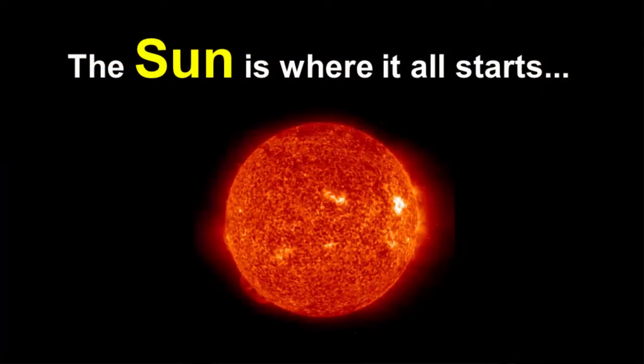We like to say that the Sun is where it all begins, because the Sun drives every aspect of weather — whether it be pressure distribution, the movement of air called wind, the water cycle, or the development of clouds and rain. If it's weather, it was created somehow or another by the Sun.